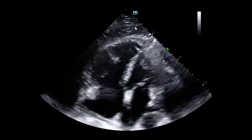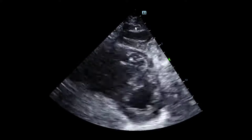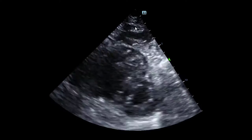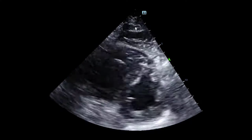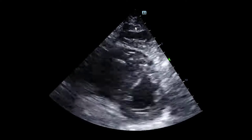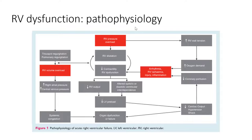Here we see the parasternal short axis view for our patient, with evidence of interventricular septal bowing. Appreciate the more circular shape of the right ventricle relative to what should normally be a crescentic-shaped right ventricle. So far we have discussed that this patient's right ventricle certainly looks dysfunctional, with a change in size, and we wonder whether this is an acute or chronic phenomenon contributing to these findings.